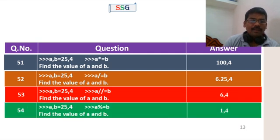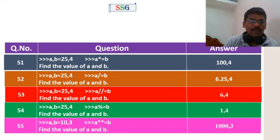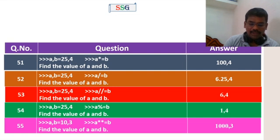Next one: a is equal to a minus b (modulus). Then 10 to the power of 3 — 10 to the power of 3 is 10 into 10 into 10, so automatically it is 1000. b value is 3.